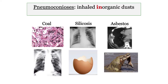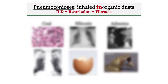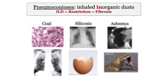Our focus will include coal, silica, and asbestos. Unlike the organic antigens associated with hypersensitivity pneumonitis, the pneumoconioses develop as a result of inhaling inorganic dusts. They are generally presented as interstitial lung disorders with a restrictive pattern owing to the development of fibrosis.